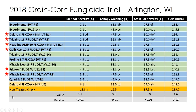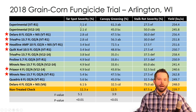Here are the treatments from that trial, along with tar spot severity on the ear leaves, canopy greening scores, stalk rot severity, and yield. Canopy greening is very telling — as tar spot severity increases, we typically get a loss in canopy greening score. Stalk rot was also very important in this trial. As a leaf becomes colonized by foliar fungi, we reduce photosynthetic capacity, and the plant robs carbohydrates from the stalks to fill out the ear. However, tar spot probably didn't solely cause all the stalk rot we saw — many other foliar pathogens were involved in 2018.